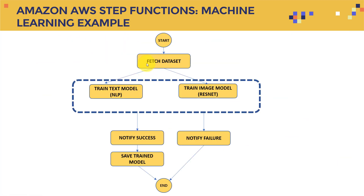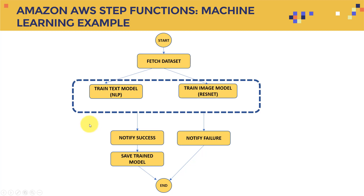Let's look at a machine learning example. For machine learning, you need to fetch your data, train your model, save the model, and make it ready for inference to deploy it. You can start with fetching the data, then select either training a text model using NLP or training an image model using ResNet — training both models in parallel.